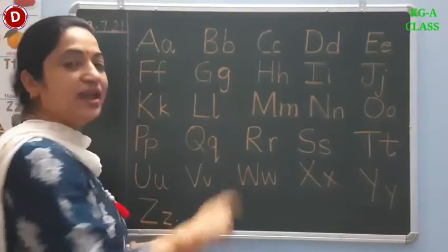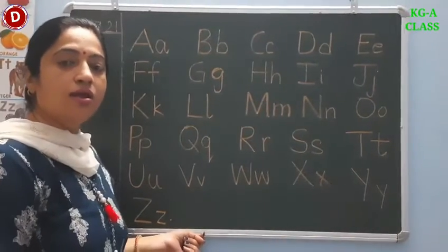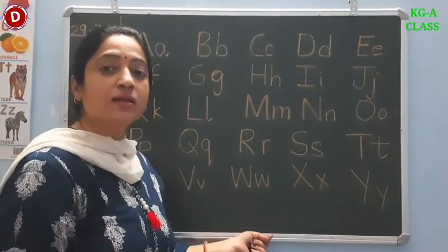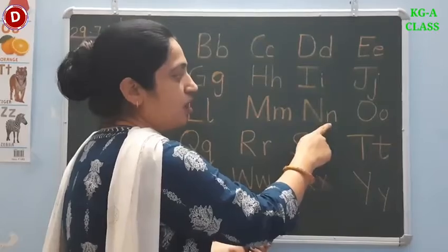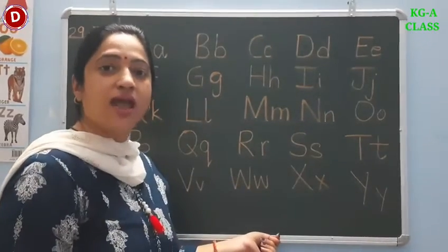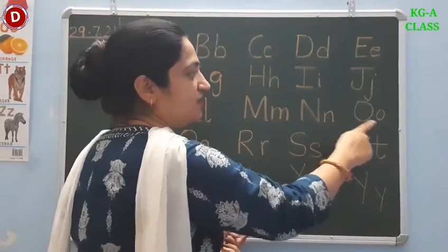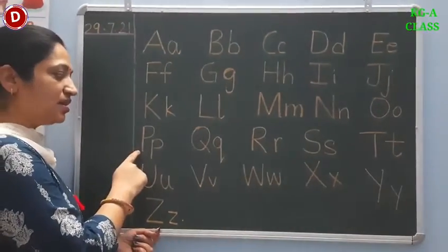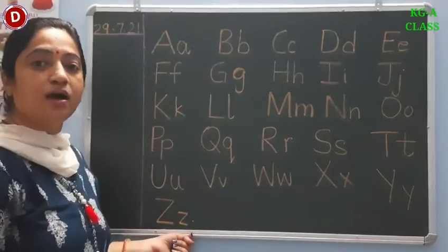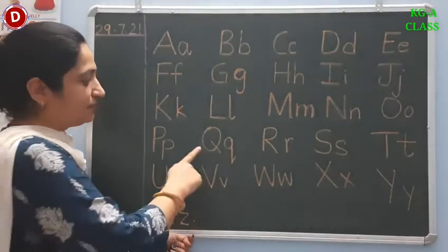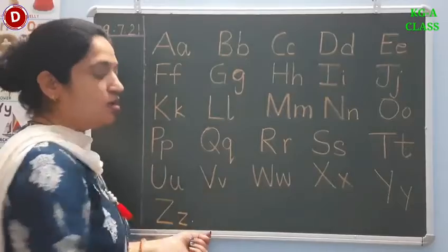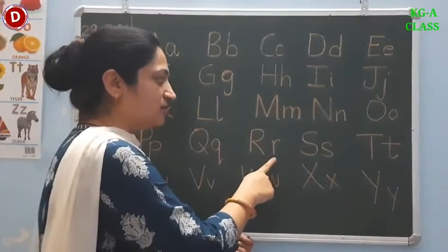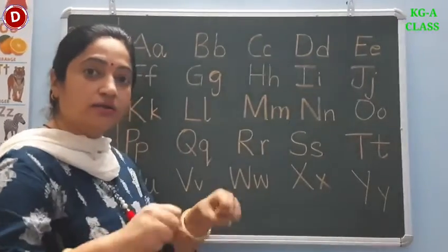This is capital L, small L. L says 'l' as in lion. This is capital M, small M. M says 'm' as in mango. Capital N, small N. N says 'n' as in nest. Children, this is capital O and this is small O. O says 'o' as in orange. Now comes P. This is capital P and this is small P. P says 'p' as in parrot. This is capital Q and this is small Q. Q says 'qu' as in queen. Now comes R. This is capital R and this is small R. R says 'r' as in rose.